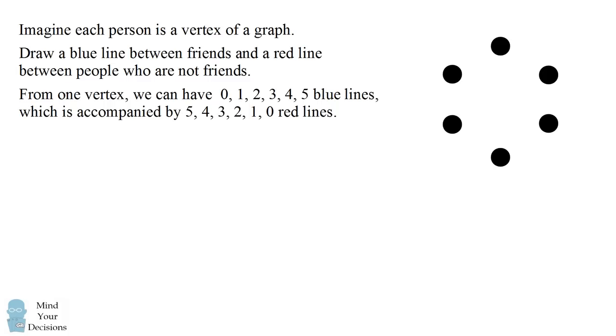From a given vertex, we can have between zero and five blue lines, which is accompanied by five to zero red lines. We're going to draw five lines from one vertex, and whichever lines are not blue will have to be red. So from this one vertex, we will always have one, two, three, four, or five blue lines, or zero blue lines, and whichever lines are not blue will be red.